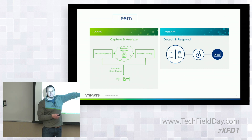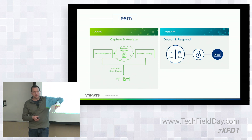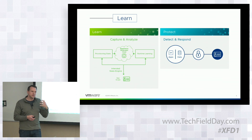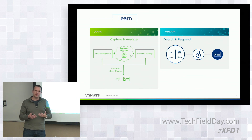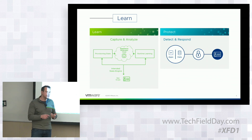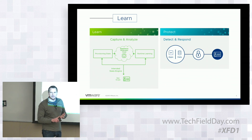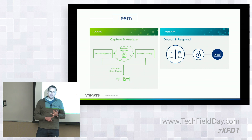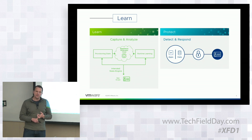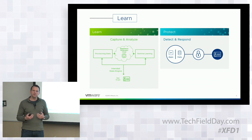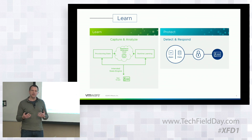We augment all of that with runtime learning. Natively, without the use of additional agents, we have the ability to collect and gather data at runtime. This is standard event-based data that you get from most endpoint agents — process data, user data, file data, network connectivity data, registry data, kernel information about what's loaded. All of those events get piped through the ESX host through VM Tools and provide us with intelligence about what's running and what's happening at runtime.